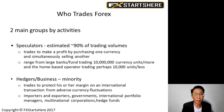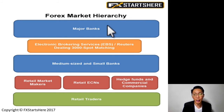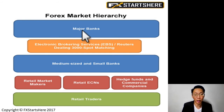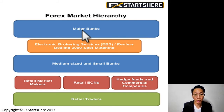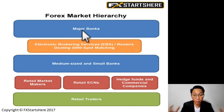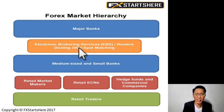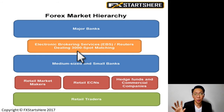This is the forex market hierarchy. Right at the top we have the major banks. These are not the local banks you find in your own country — for example, in Singapore, DBS or UOB are major local banks, but on the international scene, we're talking about central banks, like the Federal Reserve in the US. Right below the major banks we have EBS and Reuters — essentially a two-company monopoly whose role is to provide forex prices to everyone below them.